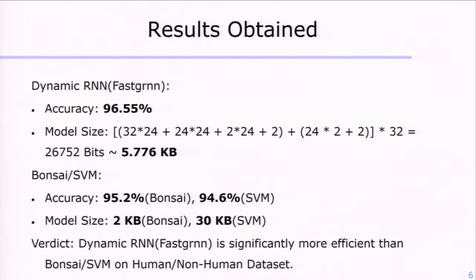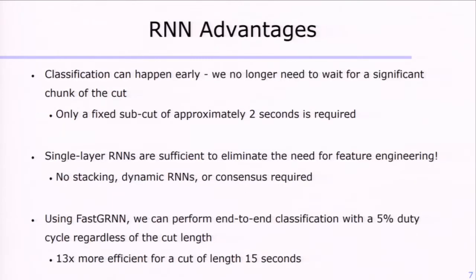The model size is reasonably competitive — especially the SVM at 5.7 KB compared to 30 KB — though it's larger than Bonsai. But we've gotten rid of feature computation entirely. This is a pretty good result because it illustrates that without resorting to more complicated techniques like dual RNN, and by avoiding feature computation, we can get good accuracy with relatively low model size. Only a fixed sub-cut of approximately two seconds is required, which makes way for faster classification.